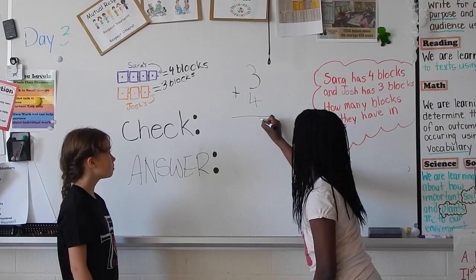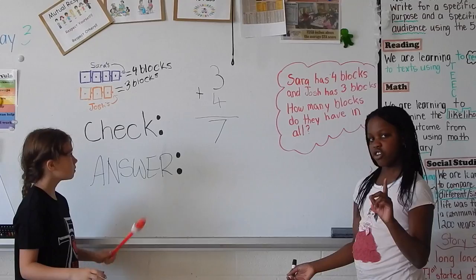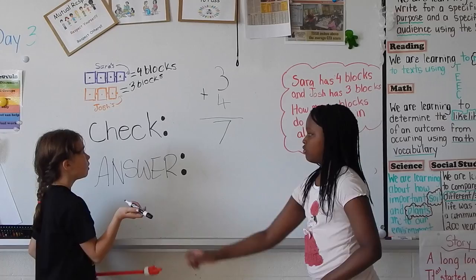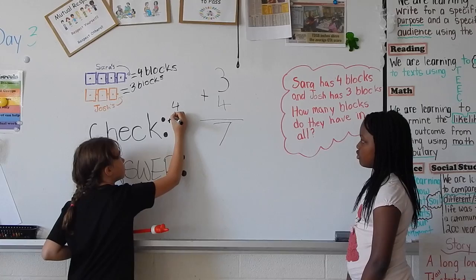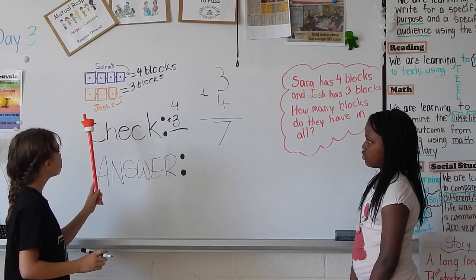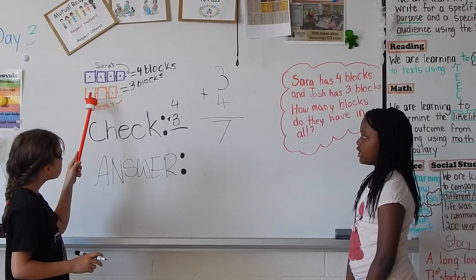So now we're going to double check our answer to make sure that we have the right answer. So, we're going to do four plus three. And so we're going to recount them up. One, two, three, four, five, six, seven. Therefore, we got the right answer.